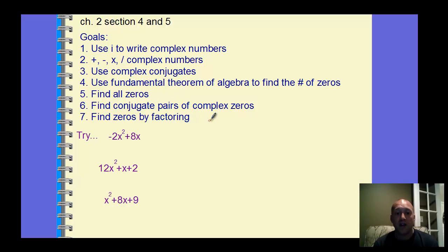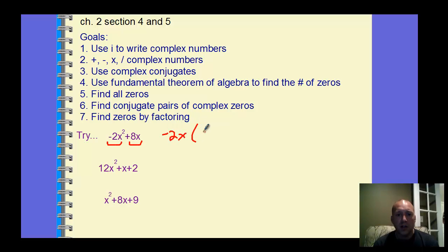These first few problems — if we look at factoring this first one here, just to review, we should be able to factor out a negative 2x. You should always look for a GCF first. Don't think you have to break it up into two binomials. Here you're just pulling out a single term, a monomial. Then we're going to get x minus 4 left in the parenthesis. Always look for that GCF first.